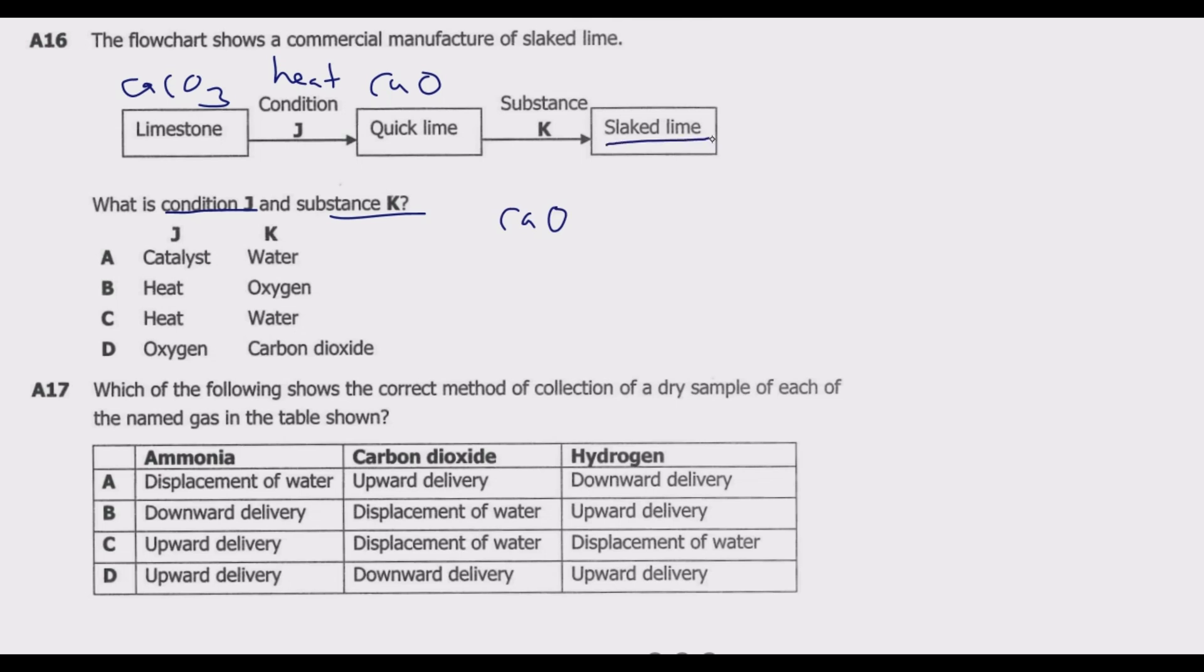This solid calcium oxide is then reacted with water, which is liquid, to get calcium hydroxide, which is the slaked lime we are looking for. So what we have is J should be heat, so anything other than heat we eliminate. Substance K should be water. So we know that C is the correct answer.